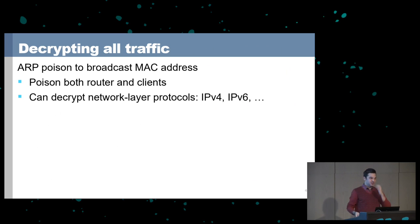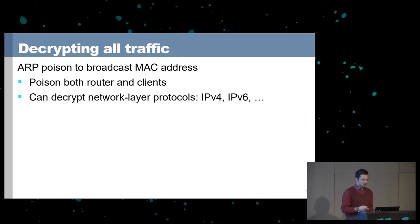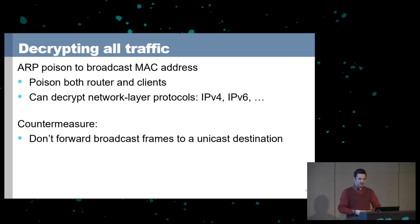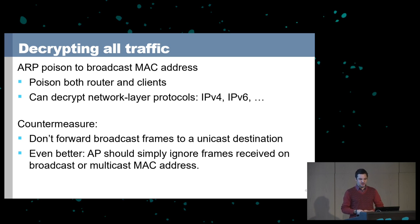To decrypt packets we ARP-poison the router and the client so that the IP address of the gateway and client map to the broadcast MAC address. Then both will send unicast IP traffic through the broadcast MAC address, encrypting it with the group key which we have. We can decrypt these packets and forward them to maintain connectivity so the client doesn't notice anything. The countermeasures are: the access point should not forward broadcast frames with a unicast final destination, or better yet, should simply ignore frames received on a broadcast MAC address in an infrastructure network.